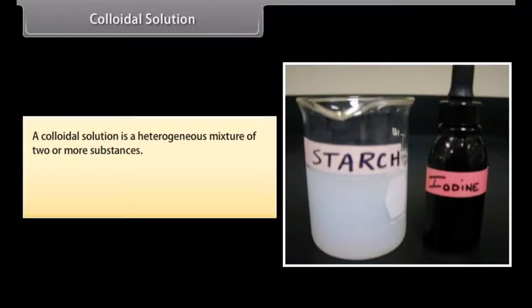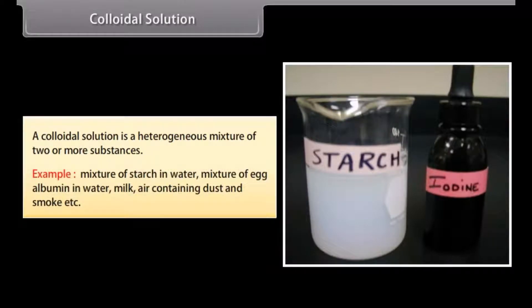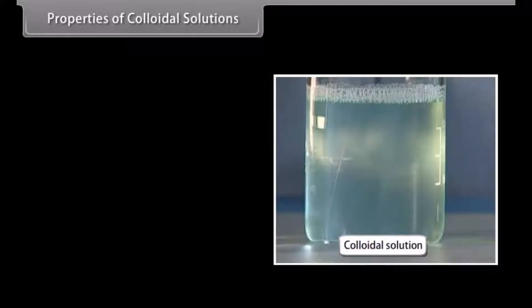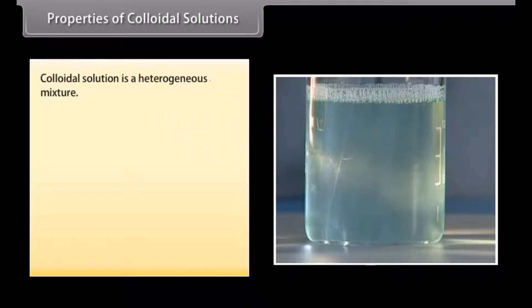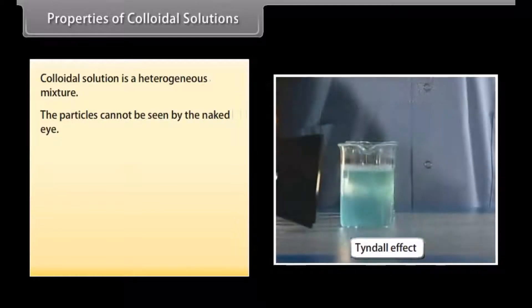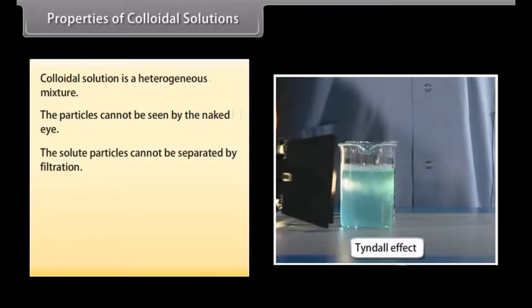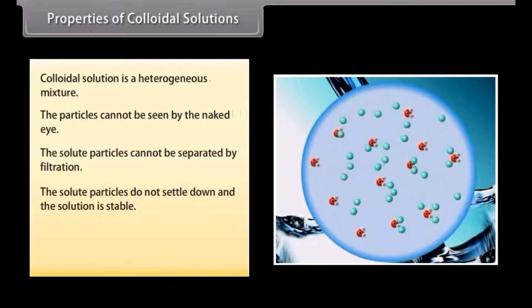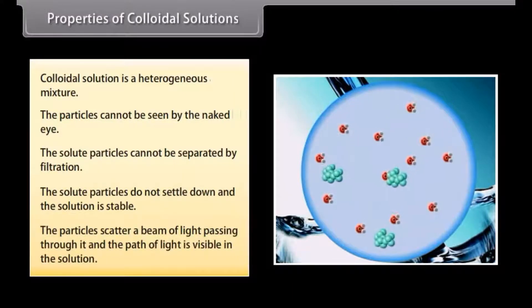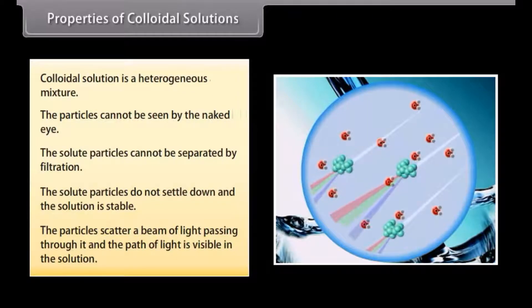Colloidal solution. A colloidal solution is a heterogeneous mixture of two or more substances. Examples include mixture of starch in water, mixture of egg albumin in water, milk, and air containing dust and smoke. Properties of colloidal solutions: the particles cannot be seen by the naked eye; the solute particles cannot be separated by filtration; the solute particles do not settle down and the solution is stable; and the particles scatter a beam of light passing through it, making the path of light visible in the solution.